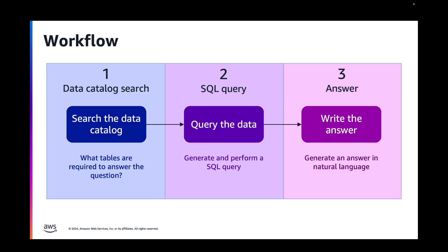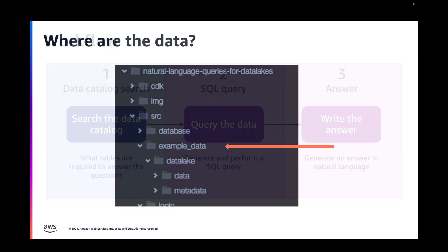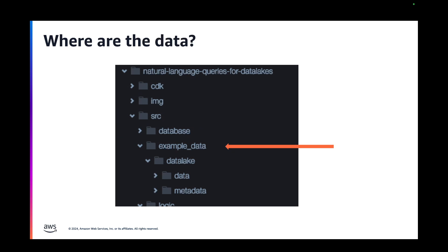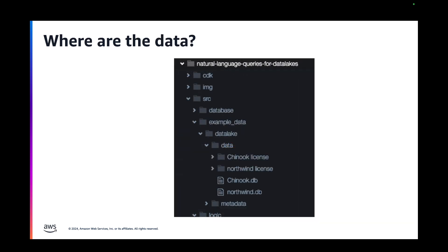Before talking about data catalog search, we need to see where the data are stored. The data are stored in the source code folder in the example data folder. In this folder, you will find a data folder which contains the databases in SQLite files. In this example, two databases are provided: the Chinook database and the Northwind database, both open source. You can also use your own data — it can be in SQLite format, but also in any other type of database like PostgreSQL or Athena. You will just have to implement the connector in the Python code.